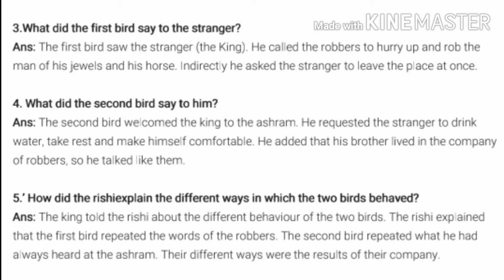Question No. 5: How did the Rishi explain the different ways in which the two birds behaved? The answer is: the king told the Rishi about the different behavior of the two birds. The Rishi explained that the first bird repeated the words of the robbers. The second bird repeated what he had always heard at the ashram. Their different ways were the results of their company.